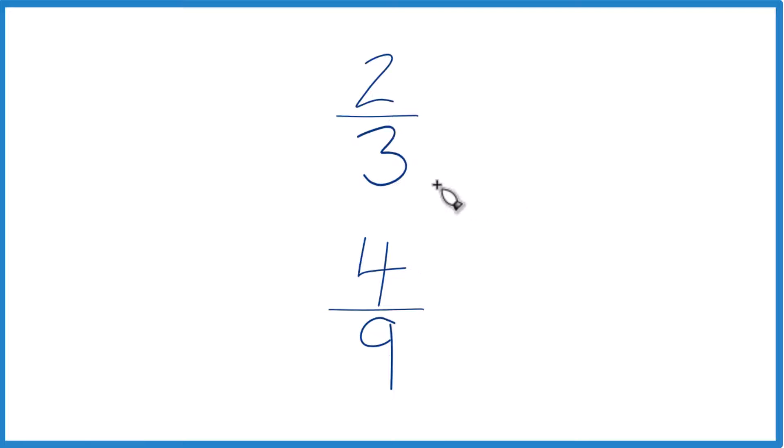Let's find a common denominator. Right now we have three and nine, and we'll use that common denominator. Once we have a common denominator, we can compare the numerators and figure out whether two-thirds is greater than, less than, or equal to four-ninths.